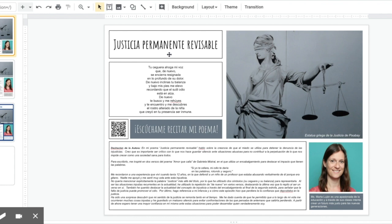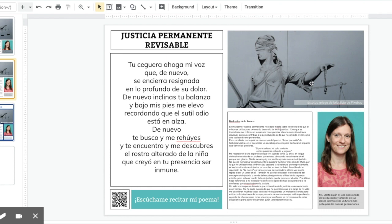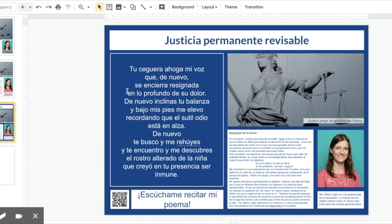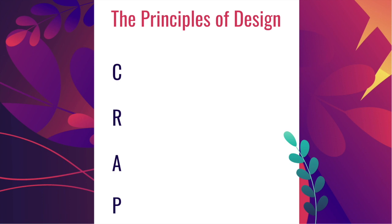Grouping elements together helps your reader know where to look. In our project design examples, the title and poem are always close together. The picture of the author, a little about the author, and the artistic blurb are also grouped together. The photo and its source citation are very close together, and everything about the poem — including listening to it — is on the left side, while about the author is on the right. The final example similarly groups the poem and QR code together and keeps the author declaration and author bio close together. That is the use of proximity.